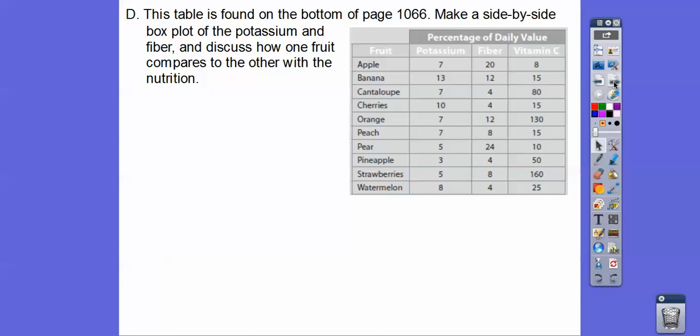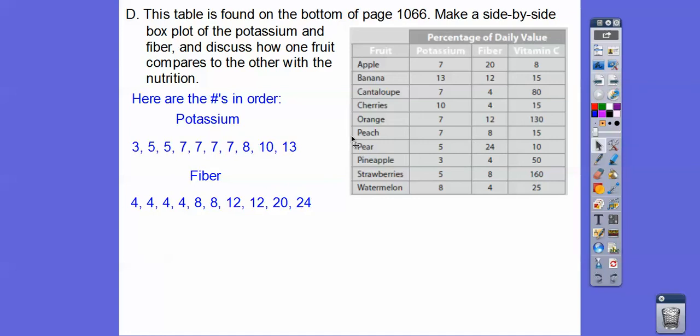This table is found on the bottom of page 1066, and let's make a side-by-side box plot of the potassium and the fiber. Here's the numbers put in order for potassium and fiber. So there are 10 values. So the fifth and sixth number—my median is the average of these guys here. My median is the average of these guys. So now we have this 7, so we start with this. There's 1, 2, 3, 4, 5. So the median is the third, or the quartile is the third number in.